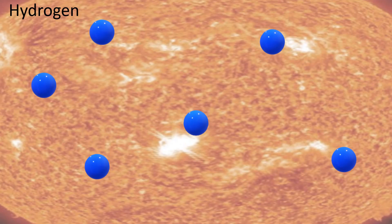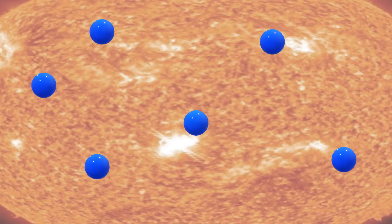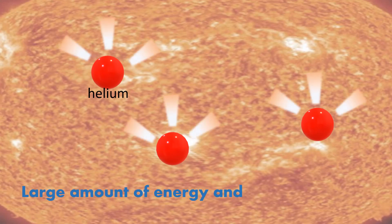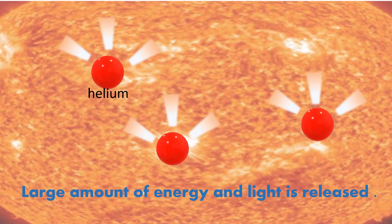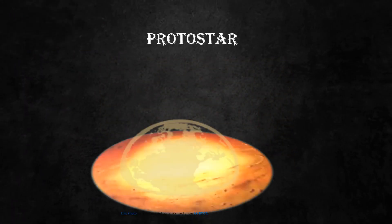As we zoom in the core, we can find many hydrogen. As the temperature and pressure in the core becomes high enough, a nuclear reaction will take place between the hydrogen. Hydrogen will collide and fuses together to form helium. In this process, large amount of energy and light is released. The ball will shine and becomes brighter. A protostar is formed.